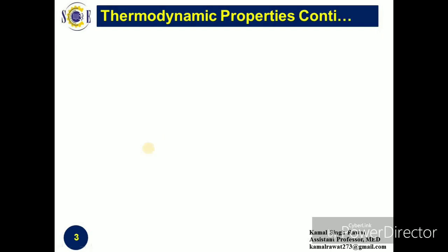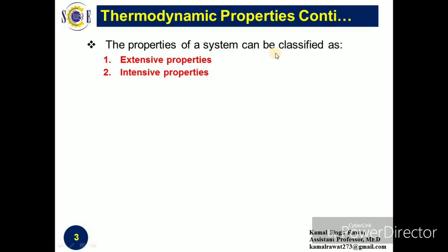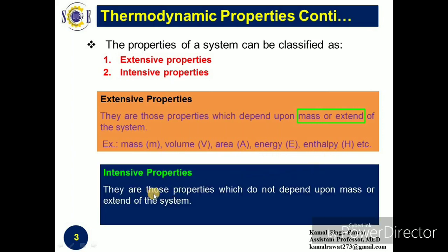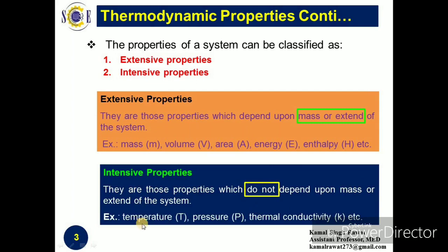Thermodynamic properties of a system can be classified into two categories: extensive properties and intensive properties. Extensive properties are those properties which depend upon the mass or extent of the system. Examples of extensive properties are mass, volume, area, energy, enthalpy, etc. Intensive properties are those properties which do not depend upon the mass or extent of the system. Examples of intensive properties are temperature, pressure, thermal conductivity, etc.